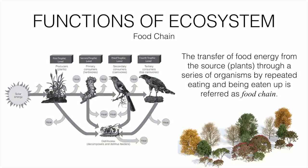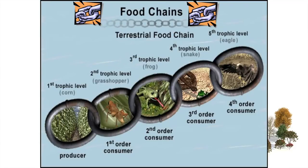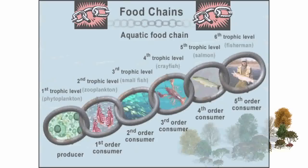More examples of food chains: plants are the producers while others are consumers. A grasshopper is the primary consumer, a bird is the secondary consumer, and a cat is the tertiary consumer. In another example, a grasshopper is the primary consumer, frog is secondary, snake is tertiary, and eagle is the fourth-level consumer.